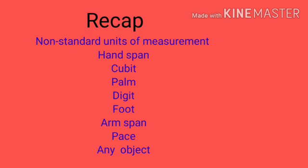So let's recap. Today we have learned some non-standard units of measurement: hand span, cubit, palm, digit, foot, arm span, pace, and any object. We also learned that all non-standard units of measurement differ from person to person.